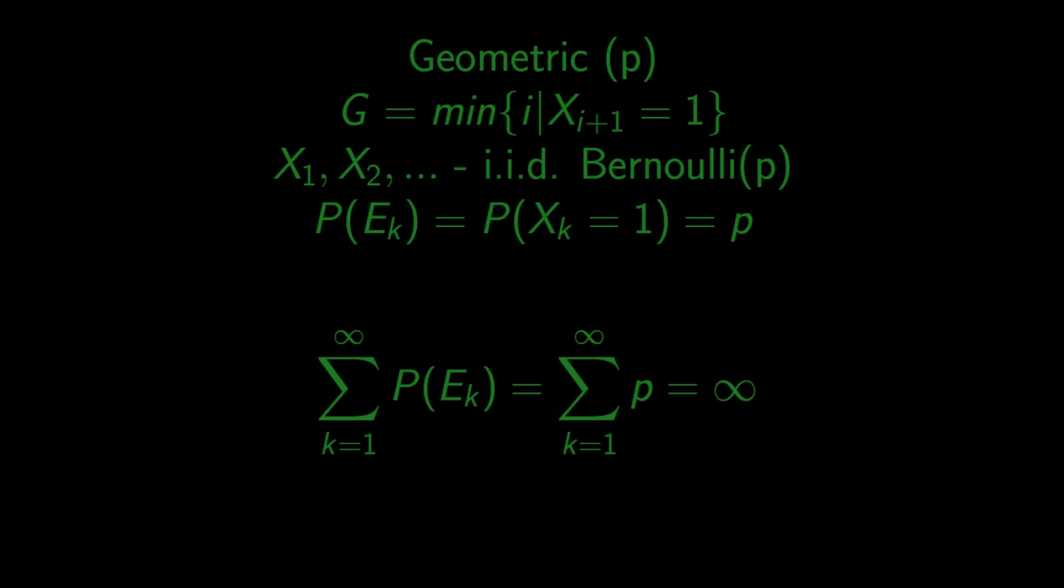Therefore, the probability that we will have successful trials in this series is one. So the geometric distribution is well defined. At last, we have the answer to this question. Successful trials will be happening over and over again in this geometric series.